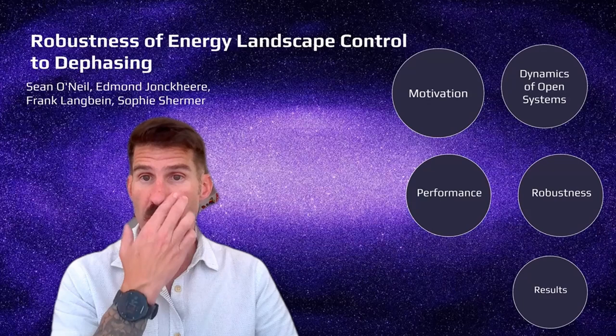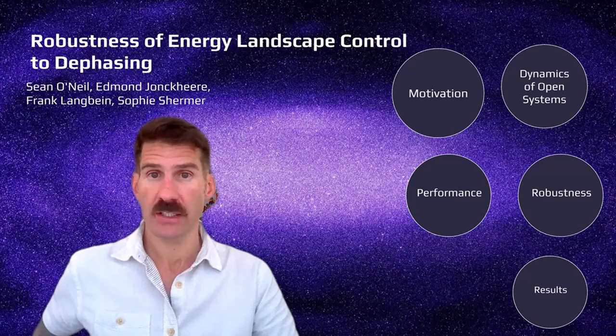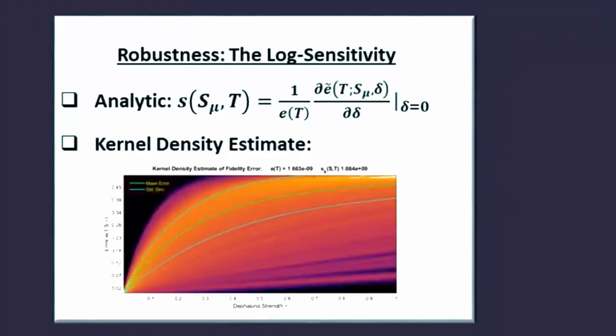As for our robustness measure, we use two independently calculated versions of the logarithmic sensitivity. The first is an analytic calculation using a normalized version of the differential sensitivity, and the other is a computational approach based on sampling of the space of perturbations and a numerical differentiation of the resulting mean fidelity error curve.